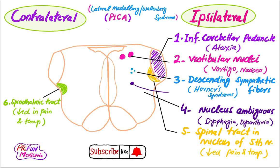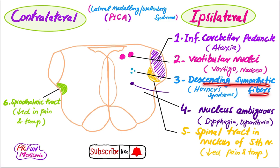The patient will present with ataxia. Due to the involvement of the vestibular nuclei, the patient will have vertigo and nausea. Due to the involvement of the descending sympathetic fibers, the patient will present with Horner's syndrome — ptosis, miosis, and anhidrosis.